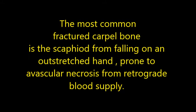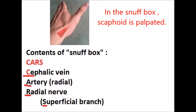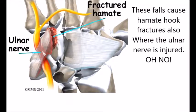The most commonly fractured carpal bone is the scaphoid, from falling on an outstretched hand. It's prone to avascular necrosis from retrograde blood supply. The scaphoid is palpated in the anatomical snuff box. These falls can also cause hamate hook fractures, which is also where the ulnar nerve is injured.